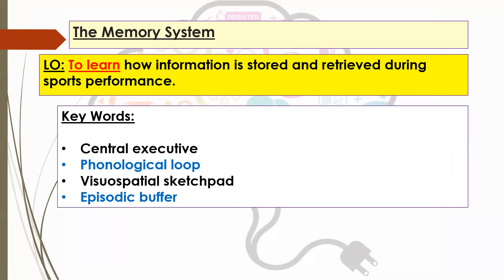What we're looking at today is something called the memory system. The learning objective is to learn how information is stored and retrieved during sports performance. There are four key words we need to be clear on: the central executive, phonological loop, visuospatial sketchpad, and the episodic buffer. Pause the video here, make sure you've got all of that noted down neatly — title, date, learning objective underlined at the top.